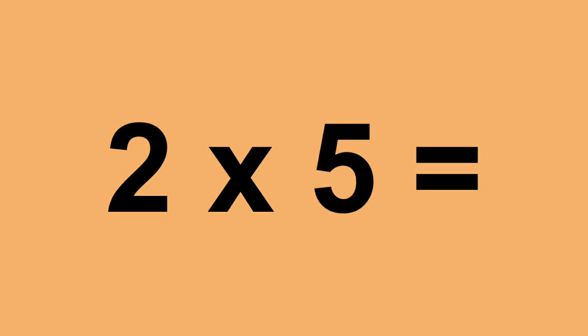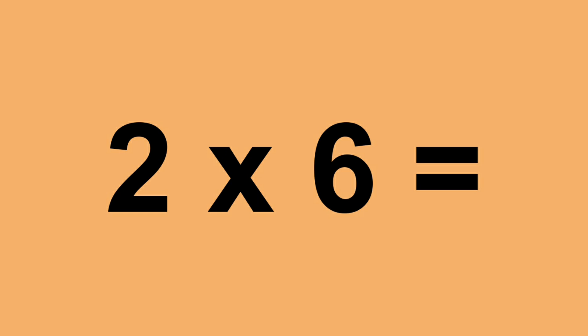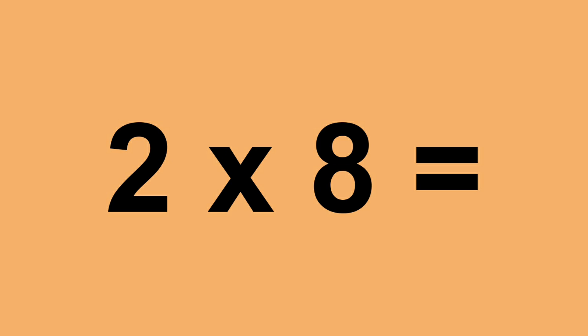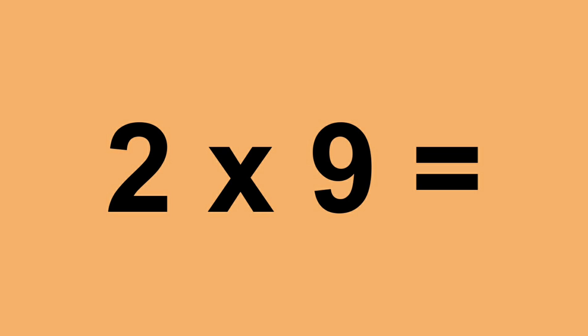Two times five equals ten. Two times six equals twelve. Two times seven equals fourteen. Two times eight equals sixteen.